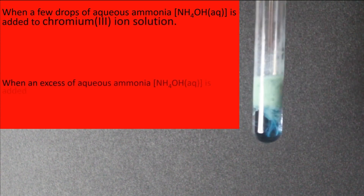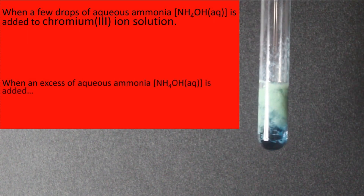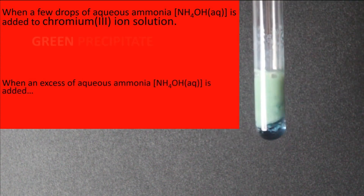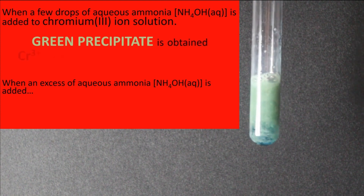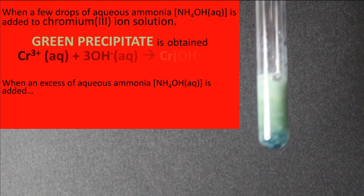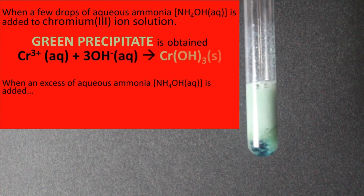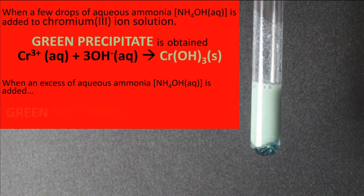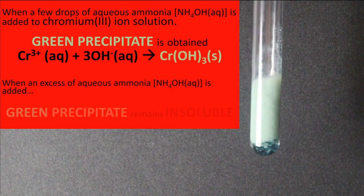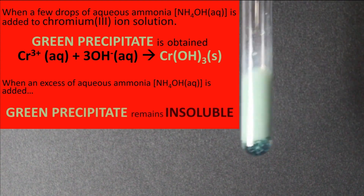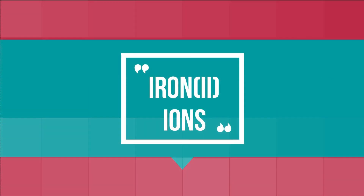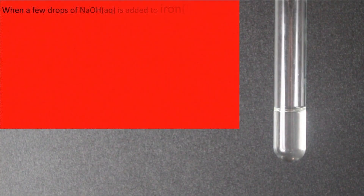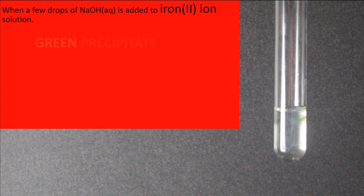Chromium ions give a green precipitate with aqueous ammonia, and this precipitate is insoluble in excess aqueous ammonia.